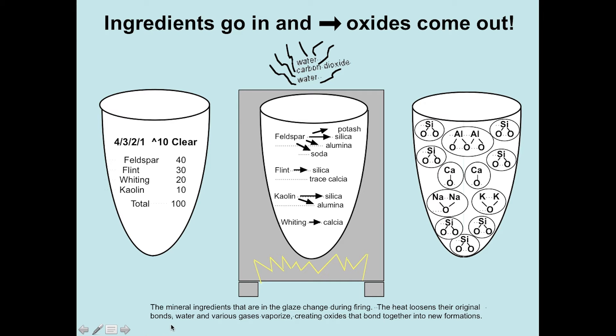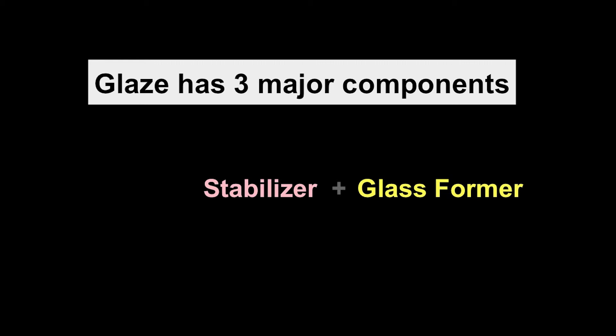The mineral ingredients in the glaze change during firing. The heat loosens their original bonds, water and various gases vaporize, creating oxides that bond together in new formations. Glaze has three major components: glassformer, stabilizer, and melter.